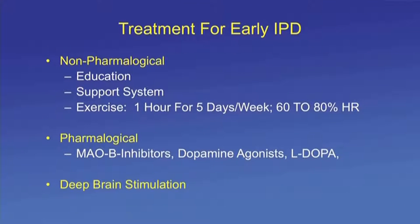Treatment for early Parkinson's is both non-pharmacological and pharmacological. Education, support groups, family involvement, hired help, and exercise are ongoing non-pharmacological components. Exercise for one hour, five to seven days a week, increasing heart rate to 60 to 80 percent of maximum, has been shown to delay Parkinson's progression. Pharmacological therapy includes MAO type B inhibition, dopamine agonists, and L-DOPA. In advanced cases, deep brain stimulation may be considered with careful patient selection.